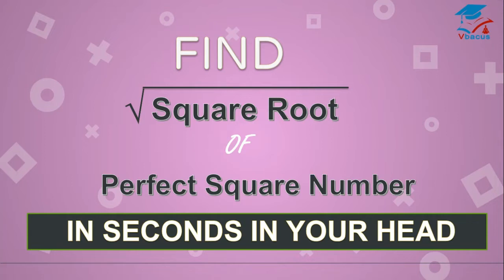Today we are going to study how to find square root of perfect squares in seconds. In order to solve this, first thing, you must know the square of numbers from 1 to 20 for 4 or 5 digit numbers, but for bigger than that, you should know square of numbers from 1 to 30.